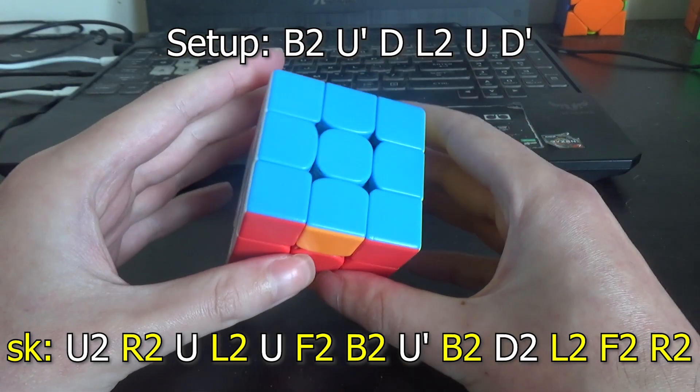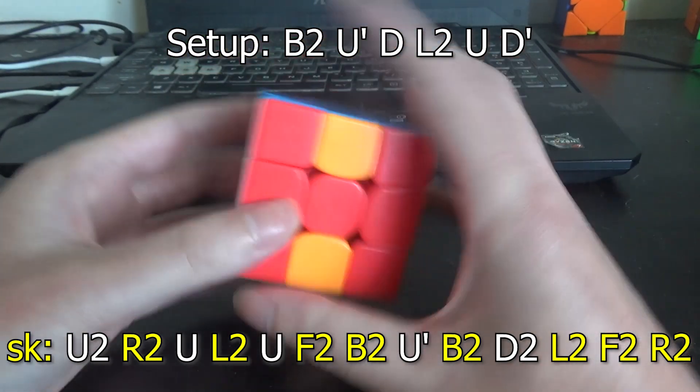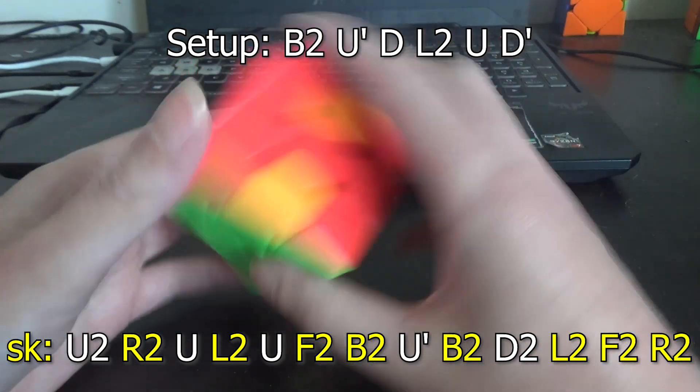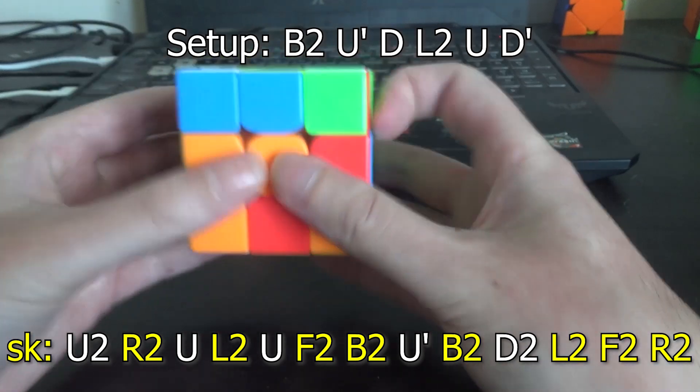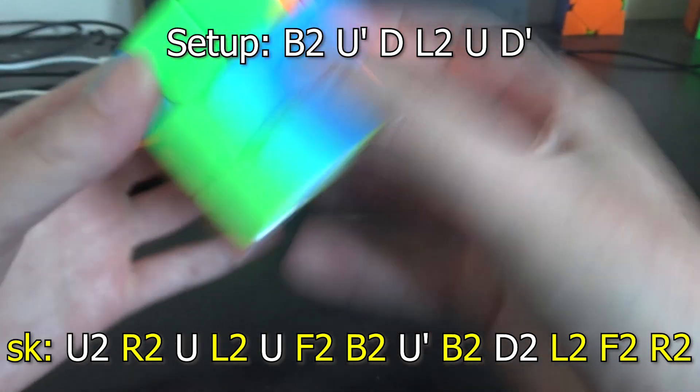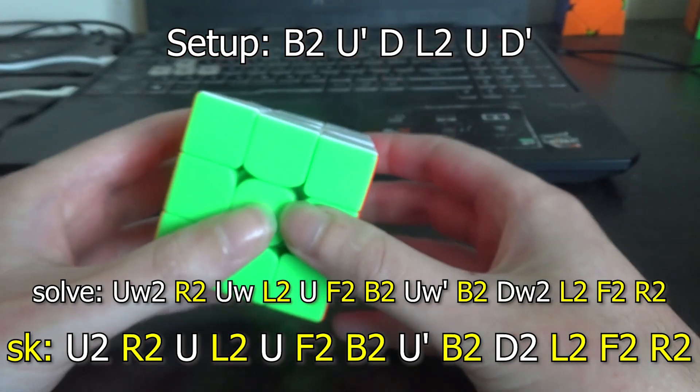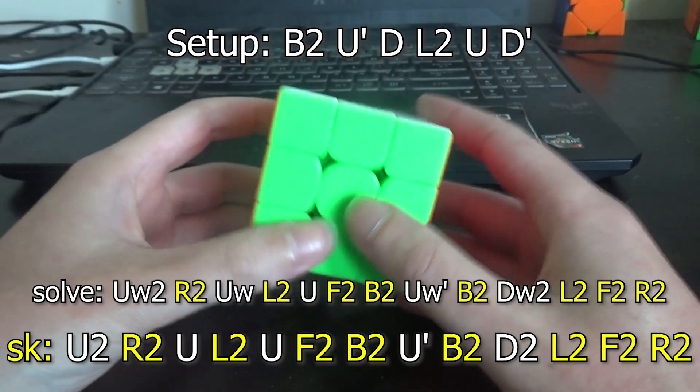And that doesn't solve it but it gives a 2E2E which means we could try widening the U2D2 on top of that to see if it works. So UW2U U U prime D2DW2L2F2R2. Wow, it works. So that's another plus zero.